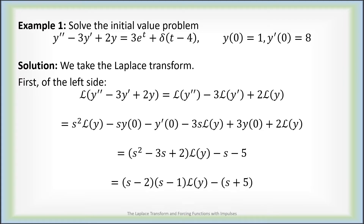Now, s squared minus 3s plus 2 factors nicely as s minus 2 times s minus 1, so we're going to preemptively do that. Also, it's going to be handy to have that s minus 5 factored out with the minus 1, so we just have minus quantity s plus 5. So there's the Laplace transform of the left side.